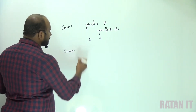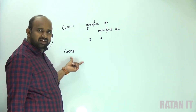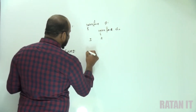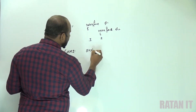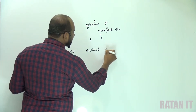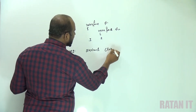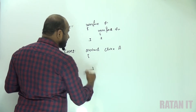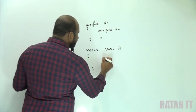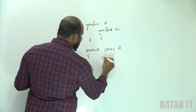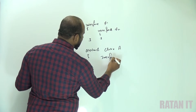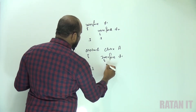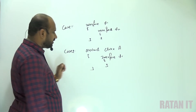Case two: declaring an interface inside an abstract class. The syntax for an abstract class — you declare the abstract modifier, abstract class EA. Inside the abstract class we can also declare the interface: interface id1 { } — this is also called a nested interface.